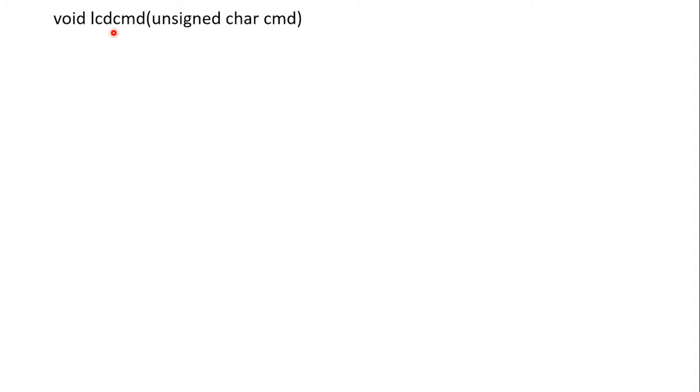We are going to make two functions: one for LCD command and one for LCD data. LCD command handles operations like clearing the display, shifting cursor position, or blinking the cursor. The function is: void lcdcmd(unsigned char cmd). When called — for example lcdcmd(0x01) to clear the display — the value 0x01 is passed and copied into the cmd parameter for use inside the function.